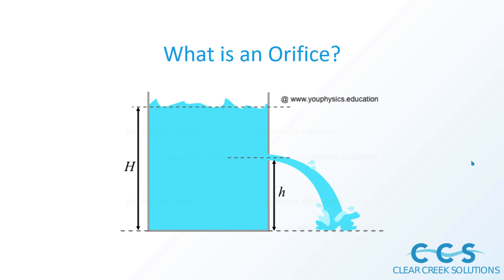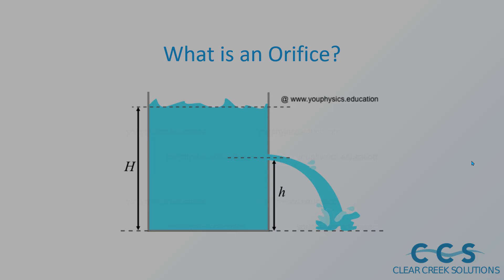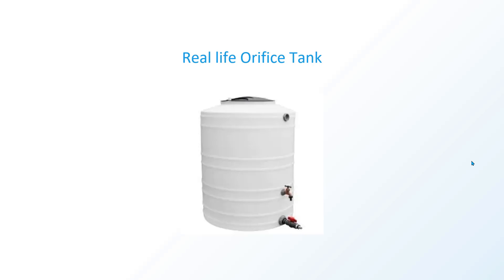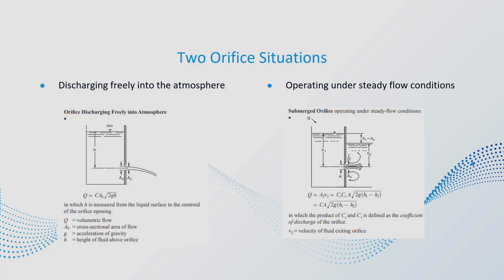Looking at a quick diagram, we have the total height of the water and then the height of the orifice from ground level. These factors contribute to how the orifice functions. This might be an example of a real-life orifice tank used in a lab project — there are a couple of different notches for the water to come out of. You might rotate a switch and the water will start to come out as you fill the tank.